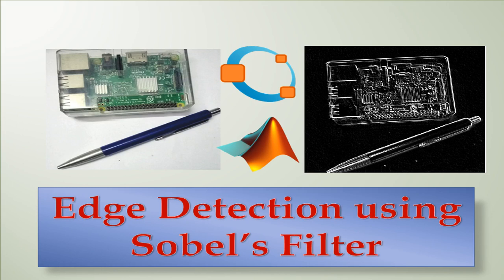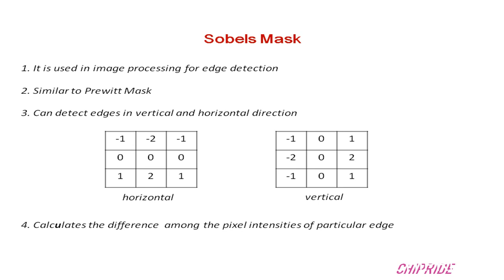Hello everyone, welcome to Chip Ride. In this video we are going to see how to detect edges using image processing. We'll be using Sobel's mask, and using Sobel's mask we will be detecting the edge. In image processing we have Prewitt's mask, which is the base mask for Sobel's mask, and similar to Prewitt's mask we have the Sobel's mask. Basically the Sobel's mask is used for edge detection, and it is similar to Prewitt's mask.